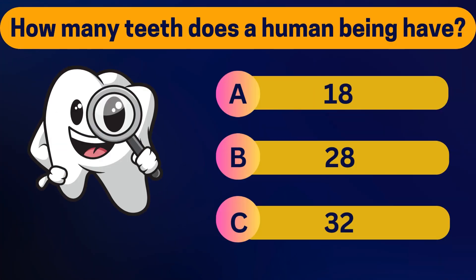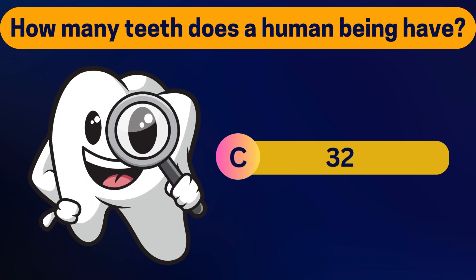How many teeth does a human being have? 18, 28, or 32? Let's go! Most adults have 32 teeth, including 4 wisdom teeth.